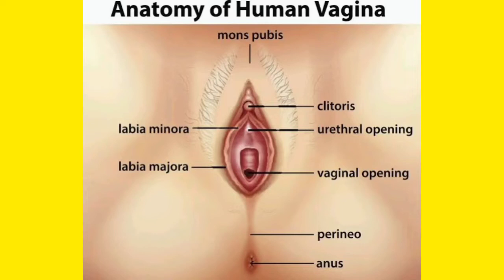The first structure is the mons pubis. What is mons pubis? It is the hairy area, and below the hairy area there is a fatty pad that is known as the mons pubis.